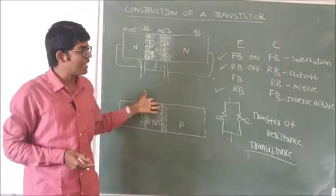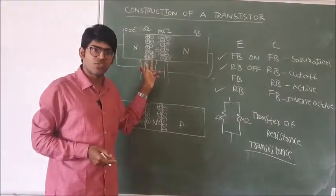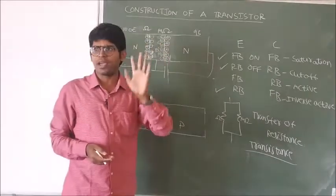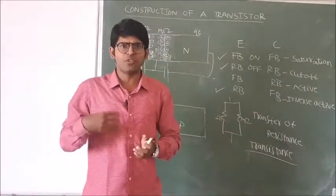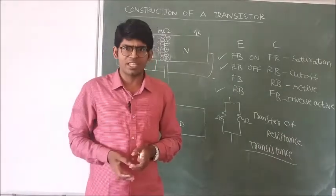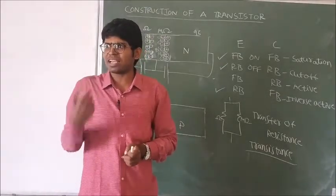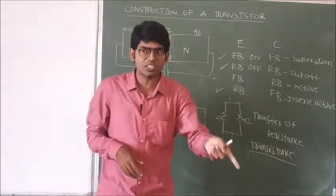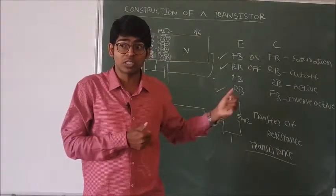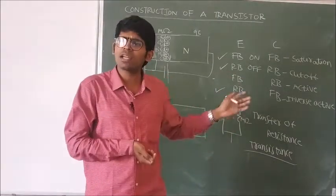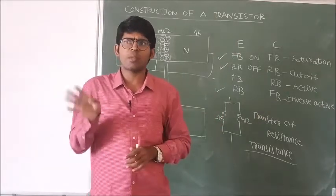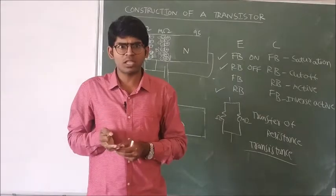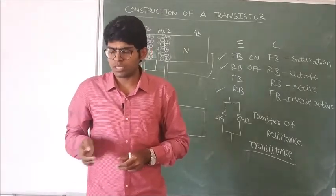So the transistor acts as an amplifier when the emitter junction is forward biased and the collector junction is reverse biased — this is the active region. In the saturation region, the transistor acts like an on-switch. In the cut-off region, it acts like an off-switch. In the inverse active region, it simply acts like a resistor. In digital electronics, when we use the transistor in computers or processors, it operates in the saturation and cut-off regions as a switch. For signal amplification, we use the transistor in the active region. In general, we do not use the inverse active region. Transistors can be biased in four possible ways, of which three are very important: saturation, cut-off, and active regions.